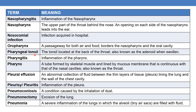Pharyngeal tonsil is the tonsil located at the back of the throat, also known as adenoid when swollen. Pharyngitis is the inflammation of the pharynx. Pharynx is a tube formed by skeletal muscle and lined by mucous membrane that is continuous with that of the nasal cavities — also known as the throat. To summarize common names: pharynx is the throat, larynx is the voice box.